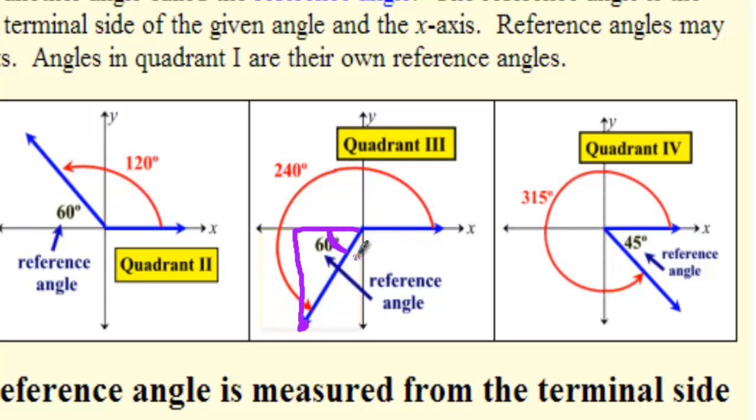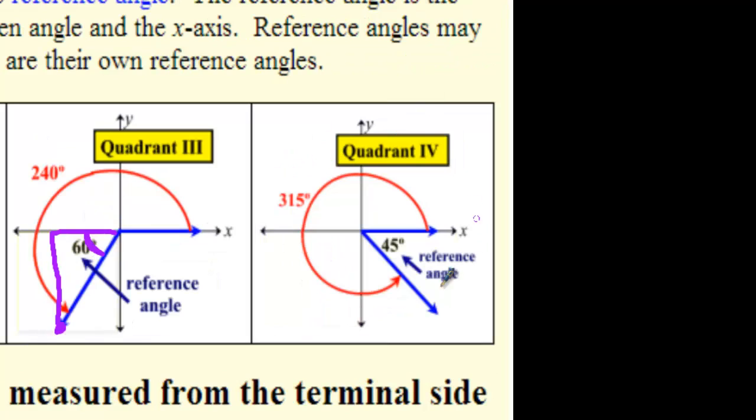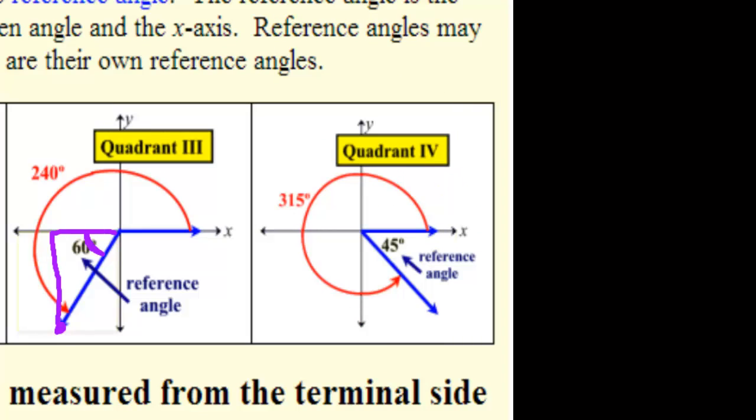Well, the reference angle is the acute angle formed by the terminal side and the x-axis. That acute angle, in this case, is 180 plus 60 degrees. So 60 degrees is the reference angle. A similar kind of thing happens in quadrant 4.